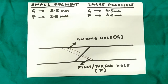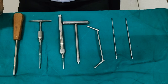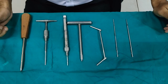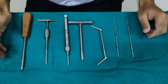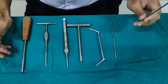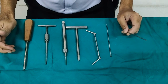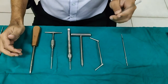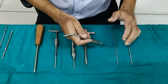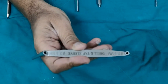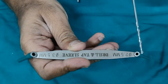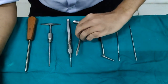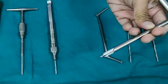Next I will show a demonstration of how to apply a lag screw. You will require certain equipment. Let's talk about small fragment first. The first step is to put a gliding hole, which requires a 3.5mm drill bit. For the pilot hole you require a 2.5mm drill bit, and you also require this sleeve — it says 2.5mm for the thread hole or pilot hole and 3.5mm for the gliding hole. Once you have made the hole, you use a countersink, which creates a space for the screw head to go inside the bone so it's not prominent.